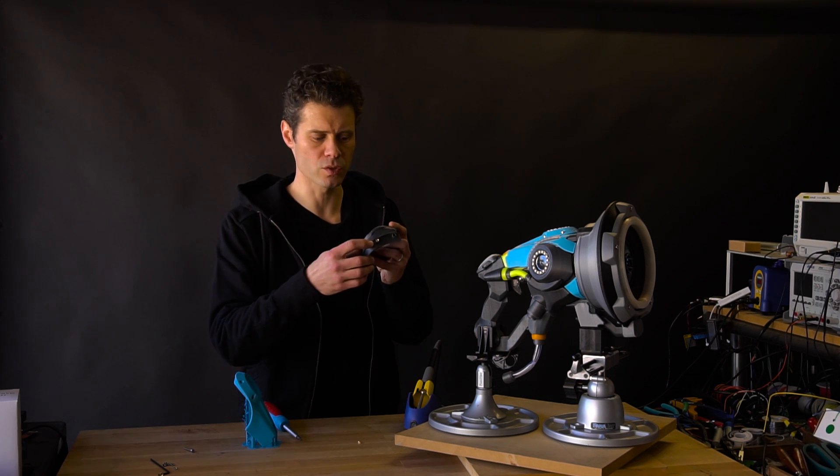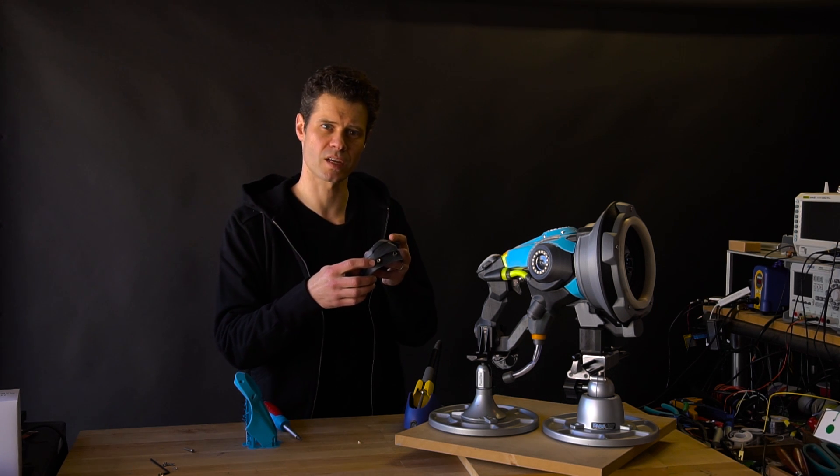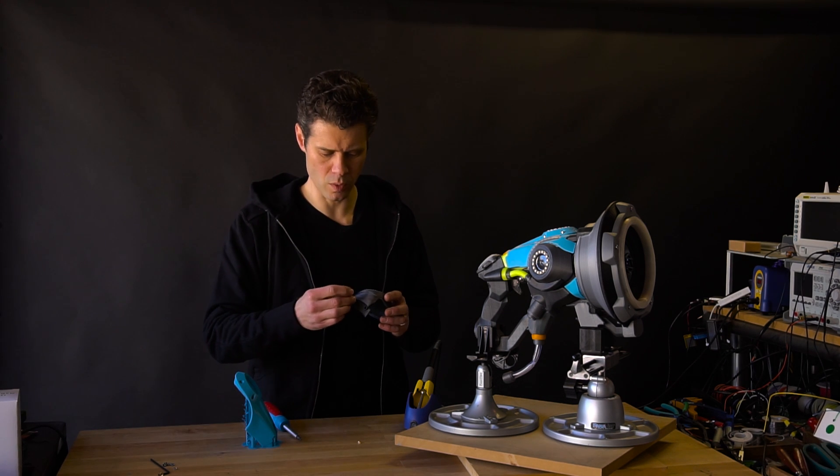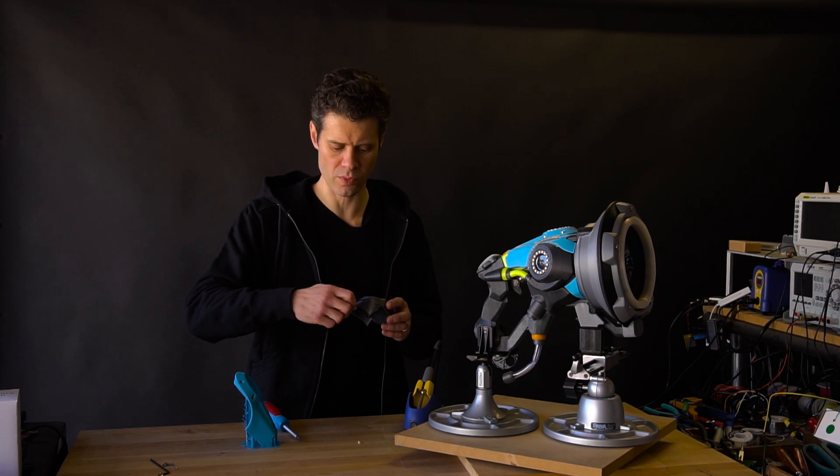I've now used a soldering iron to push this little brass insert into the plastic in a hole that I made in the 3D model, and now a screw that is of the right size will thread in there nicely.